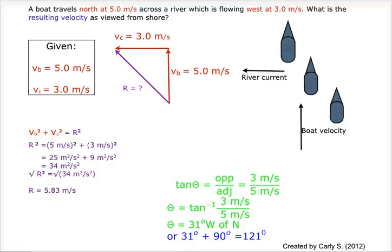A boat travels north at 5 meters per second across a river which is flowing west at 3 meters per second. What is the resulting velocity as viewed from shore?